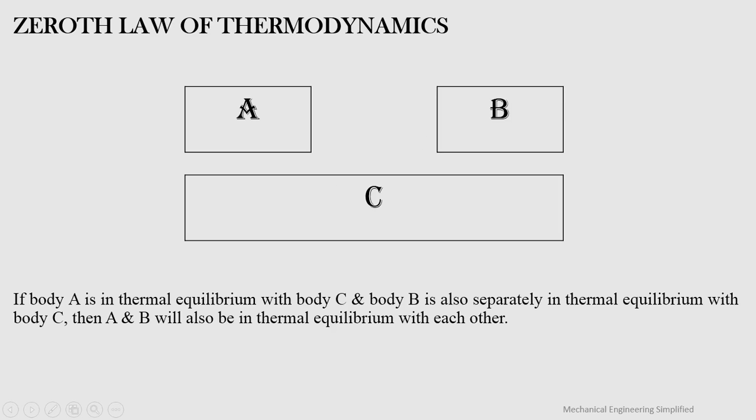The Zeroth Law of Thermodynamics states: if body A is in thermal equilibrium with body C, and body B is also in thermal equilibrium with body C, then A and B will also be in thermal equilibrium with each other. That means if the temperatures of A and C are the same, and temperatures of B and C are the same, then the temperature of A and B will also be the same.